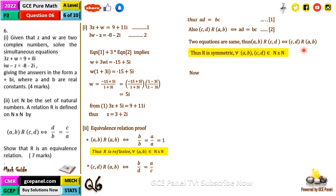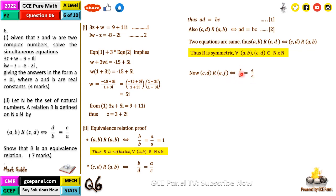The last property to test is transitive. Just as in school: if a is a friend of b and b is a friend of c, therefore a is a friend of c. We already know (a, b) relates (c, d). Now test (c, d) relating another ordered pair (e, f). This gives f over d equals e over c, and rearranging, f over e equals d over c — call this equation three.